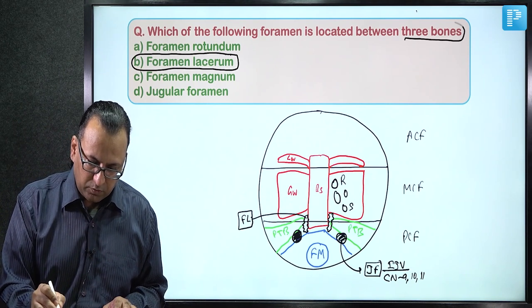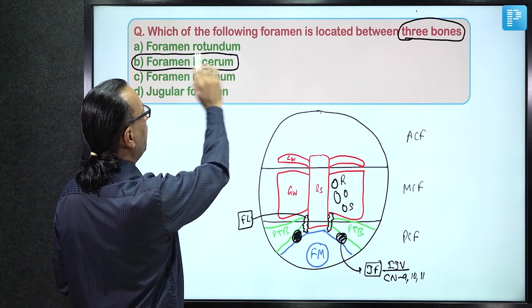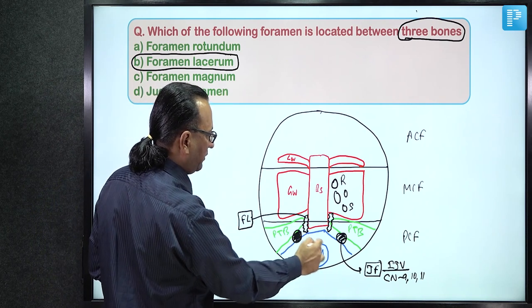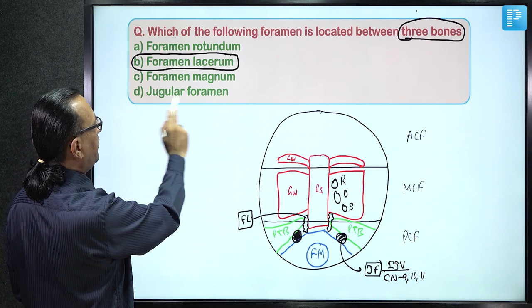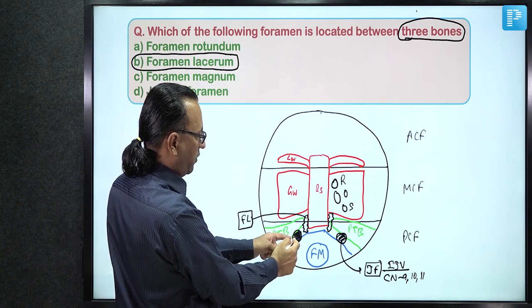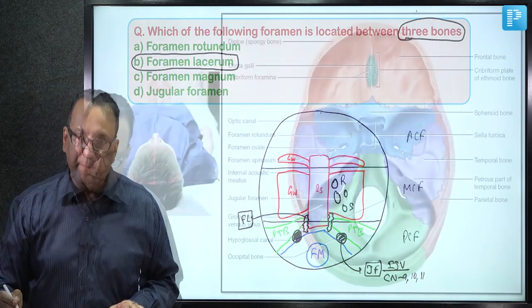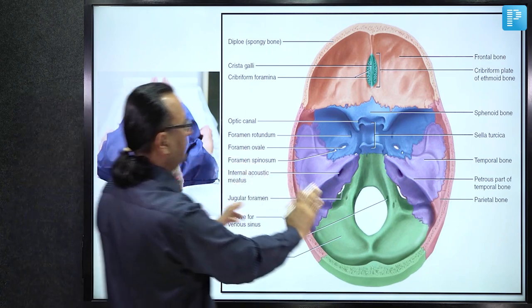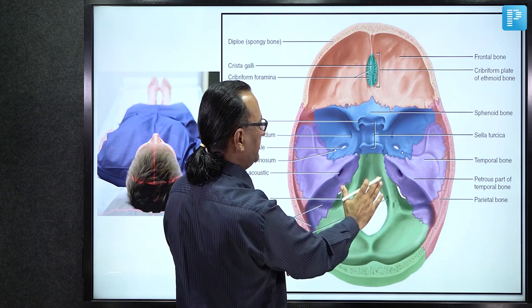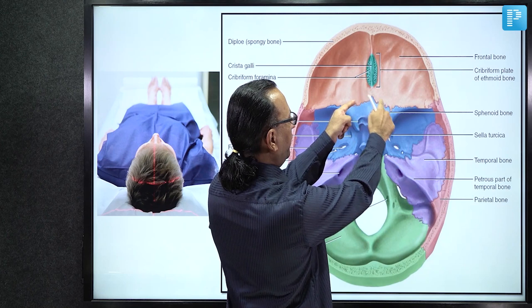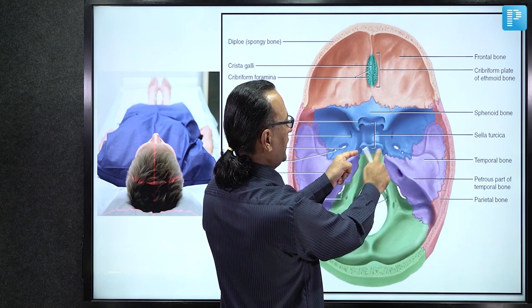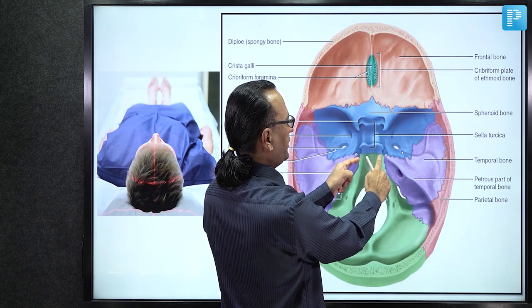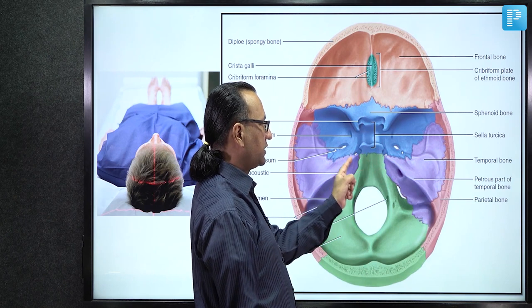Answer: Foramen lacerum, because it is bounded by three bones. Foramen rotundum is within a single bone (greater wing of sphenoid), foramen magnum is within the occipital bone, and the jugular foramen is bounded by two bones (medially occipital, laterally temporal). Looking at the superior view of the cranial cavity: there is a synchondrosis (primary cartilaginous joint) between the body of sphenoid and occipital bone in the posterior fossa, near which the foramen lacerum is located.